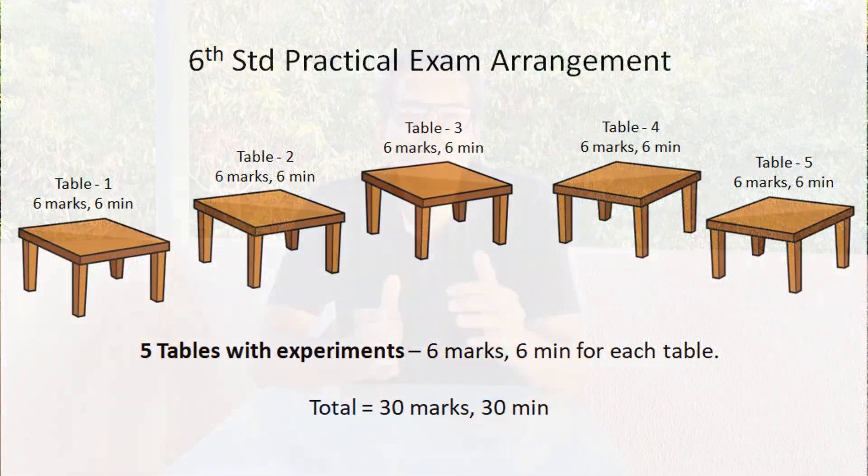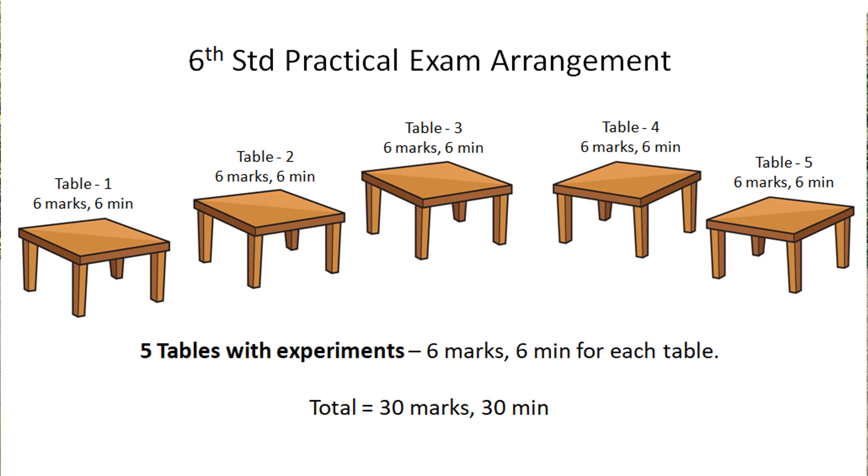For biology practical, no experiment can be completed in such a small time. So they will give you samples, specimens, or objects to observe, and you have to make observations and write the answers. For 6th standard, when you enter the exam hall, there will be 5 tables or 5 sets of experiments. You have to visit each table and carry out the experiments. On every table, you get 6 minutes. There will be things to do, specimens or objects to observe, and a card to read with instructions and questions. You answer and move to the next table. In all, you will visit all 5 tables — overall 30 marks in 30 minutes.